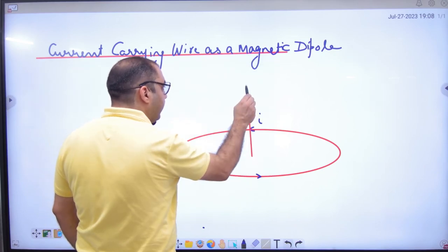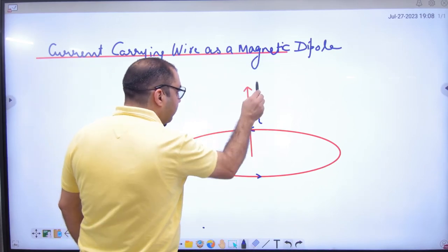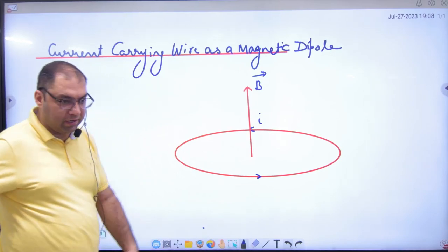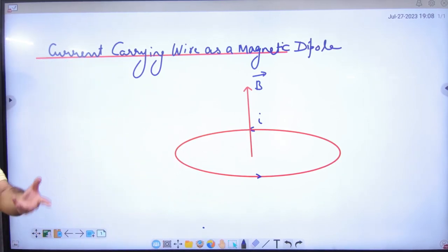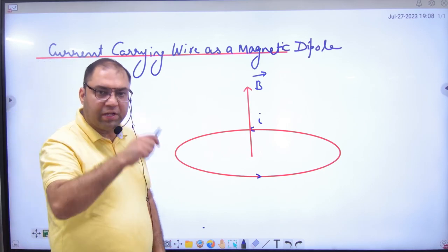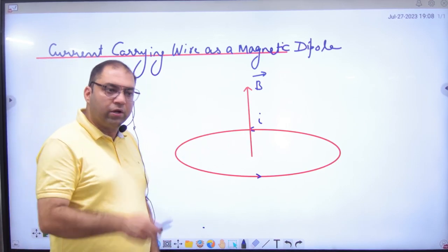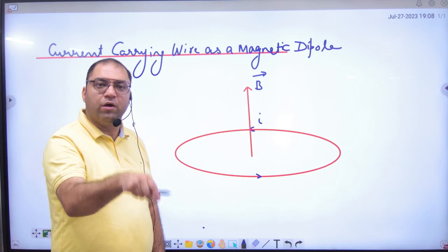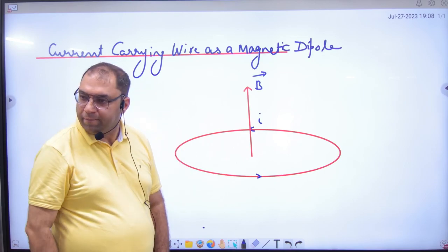So what are all these points? Remember, we did it in Biot-Savart Law. If it is a magnet, it has poles. One is south and one is north. Clockwise, it is south. Anticlockwise, it is north.